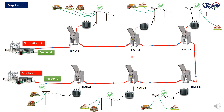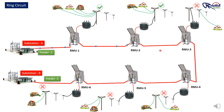When a fault is detected between RMU2 and RMU3, the switches in RMU2 and RMU3 are used to isolate the fault. The switch on each side of the faulty section is opened, effectively removing the damaged part from the circuit. When the faulted section is isolated, Feeder 2, which is connected to substation B, can now be used to supply power, and power can flow from Feeder 2 to all RMUs and transformers on the network, maintaining a continuous supply to the load.